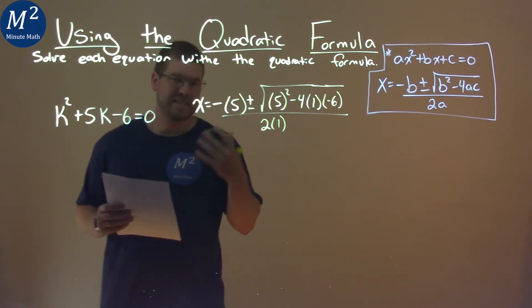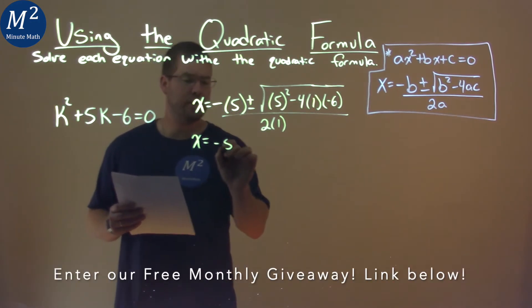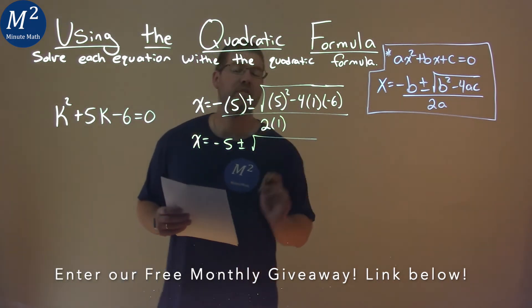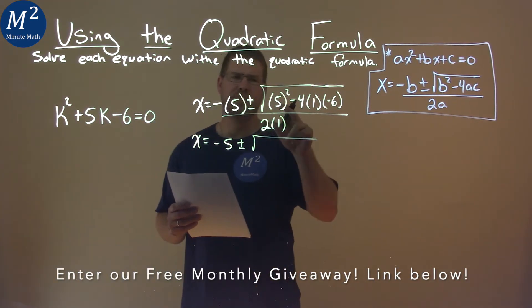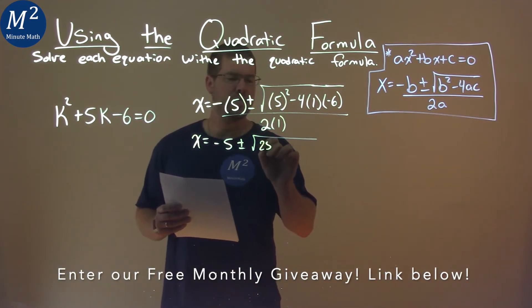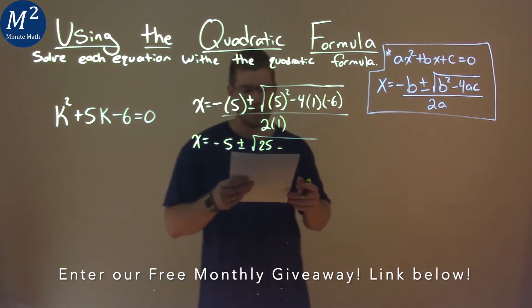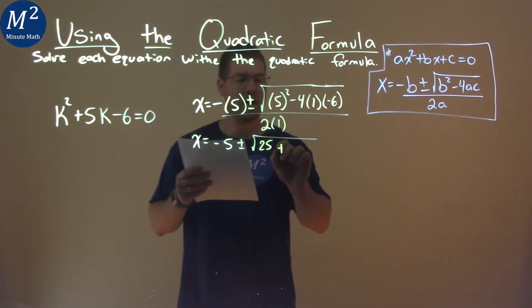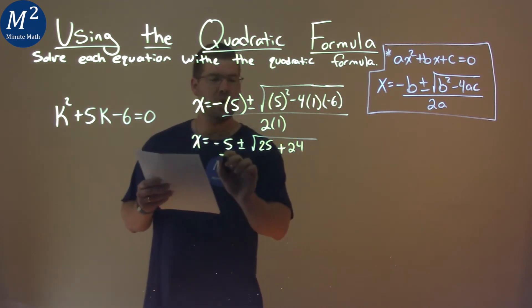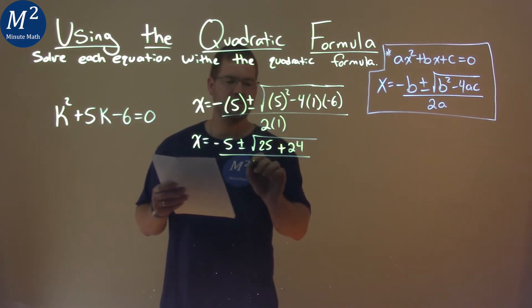Now we want to simplify this step by step. x equals negative 5 plus or minus... let's deal with the square root. 5 squared is 25, and then negative 4 times 1 times negative 6 is positive 24, and that's all over 2 times 1, which is 2.